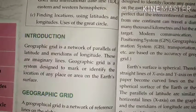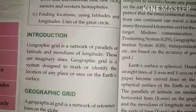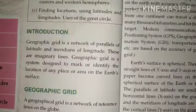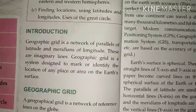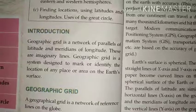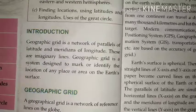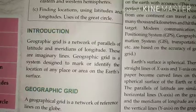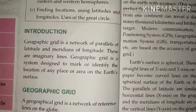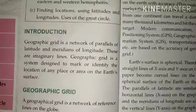Good morning everyone. In the previous video I gave you the introduction of the chapter geographic grid, so today we will start this chapter. Chapter 3: geographic grid is a network of parallels of latitude and meridians of longitude. These are imaginary lines. Geographic grid is a system designed to mark or identify the location of any place or area on the earth's surface.